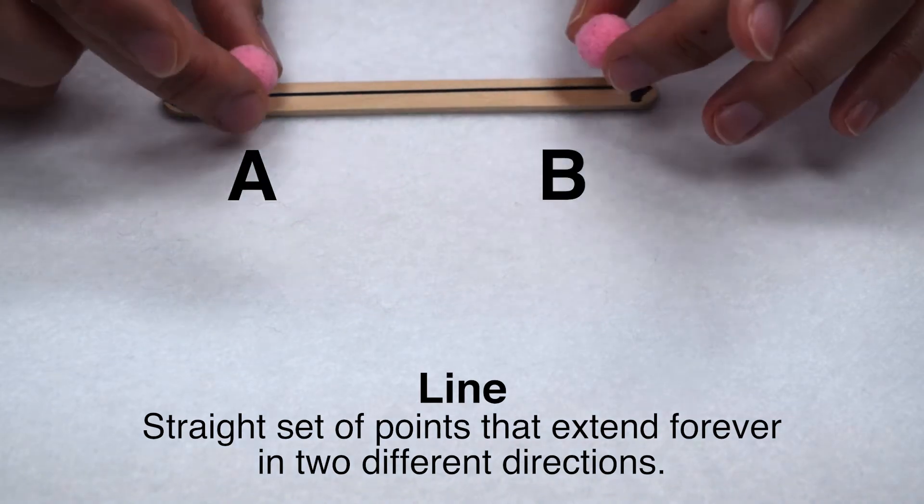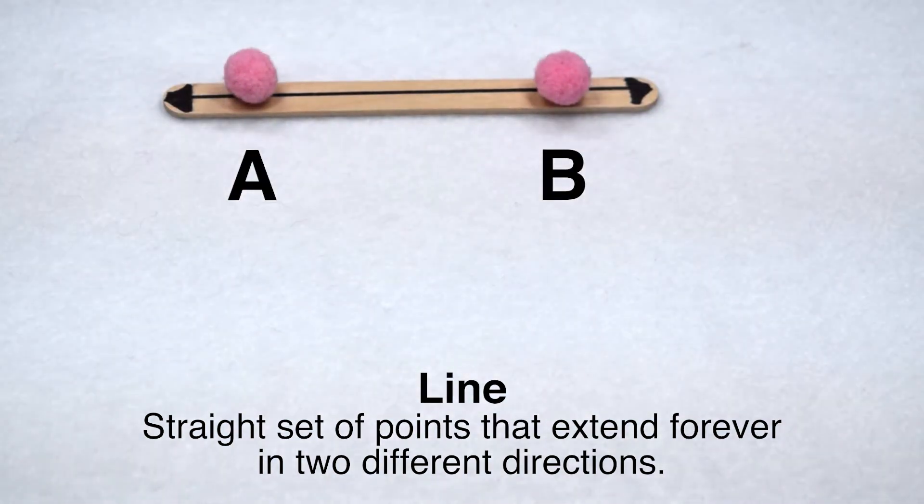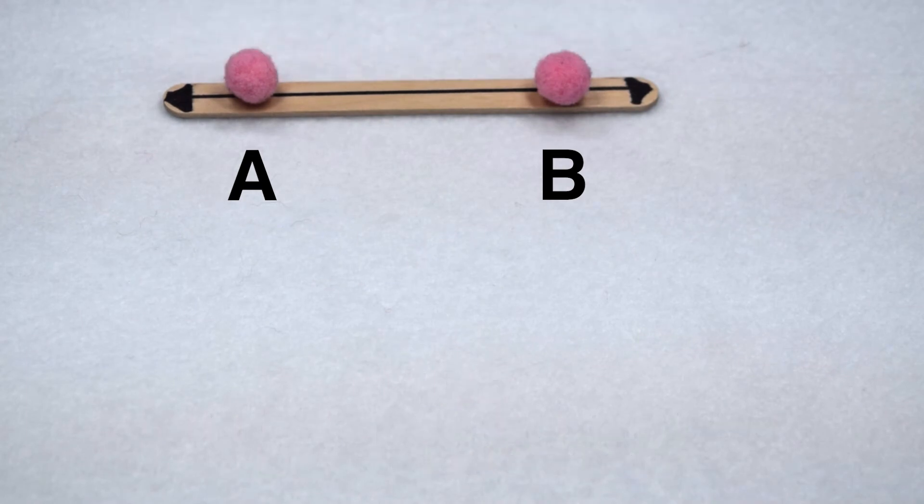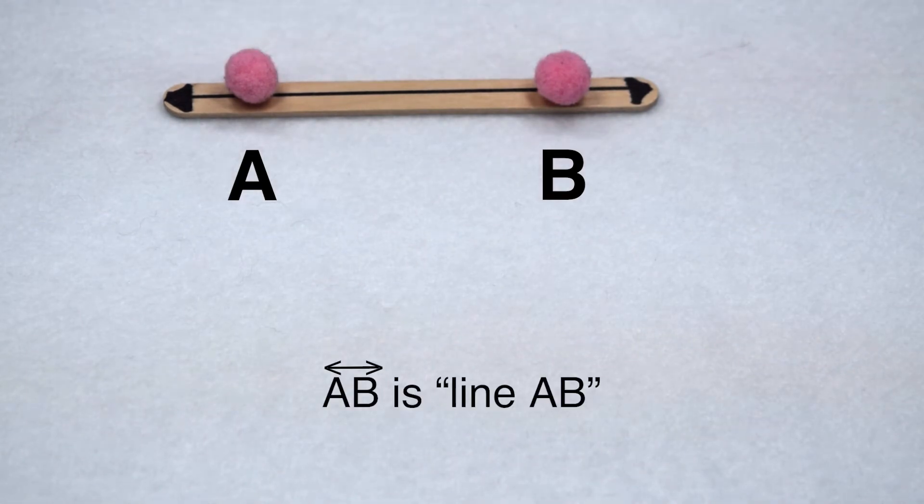We can name that line by using two points along it and label it. So this would be line A, B. When we write it symbolically, be sure to put a line symbol over the name so other people know what type of line you are referring to.